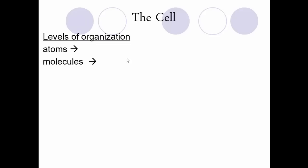Cells are also just one level of organization that we can study. Starting with the smallest, we have atoms — everything is made of atoms. When you put atoms together you get molecules, like monomers such as amino acids. Molecules put together give you macromolecules — simple sugars together give you a carbohydrate, amino acids together give you a protein. Put macromolecules together and you get organelles, which are cell parts each with their own function. Put organelles together and you get cells, the smallest unit of life capable of independent existence.